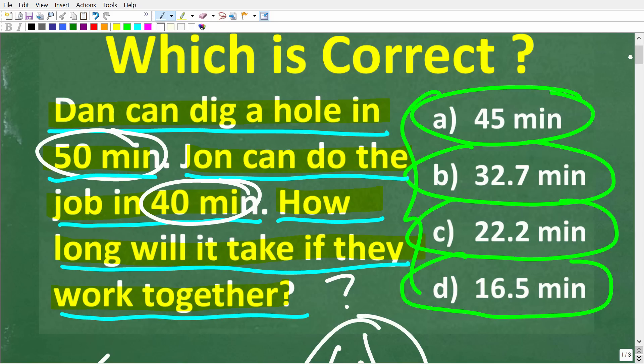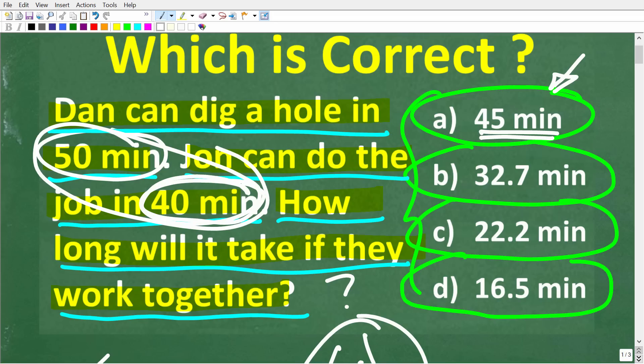What we're talking about here is something called an algebra work word problem. Now one answer here that doesn't make sense is 45. If you took the average of these two numbers, 50 and 40, which of course is 45, that doesn't make sense. Because if Dan can do this job in 50 minutes and John can do it by himself in 40 minutes, if they work together it shouldn't take longer than the time John can do by himself.